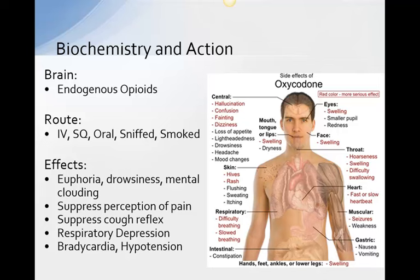Opioids activate endogenous opioids in the brain and trigger the brain reward system. They can be taken orally, sniffed, or smoked in street settings. The effects that make opioids so addicting include euphoria, decreased mental alertness, altered perception of pain, and an escape effect in the brain.